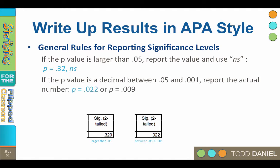If a p-value is a decimal between 0.05 and 0.001, report the actual number, such as P equals 0.022 or P equals 0.009.